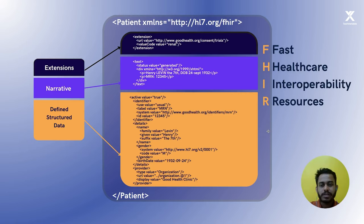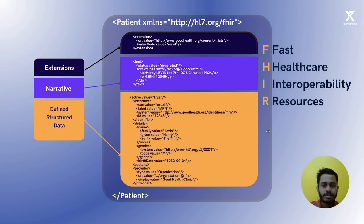Each resource has a defined schema — which schema to use for a specific resource. Here, as an example, I am showing you the patient resource. You can represent these resources in XML, JSON, and other formats. A FHIR resource is divided into three parts: extensions, narrative, and defined structured data.